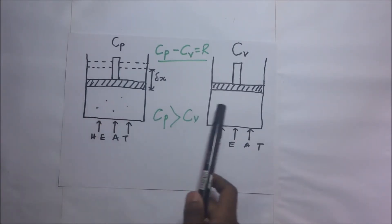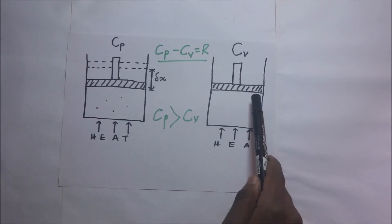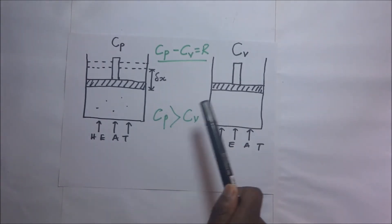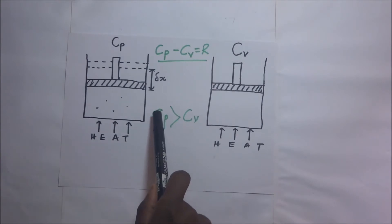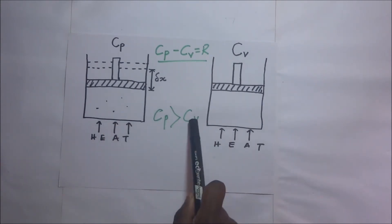And at constant volume, there is no external work being done to increase the volume of the gas. And so the heat supplied here only increases the internal energy of this gas. And so that is why the specific heat capacity at constant pressure is greater than the specific heat capacity at constant volume.